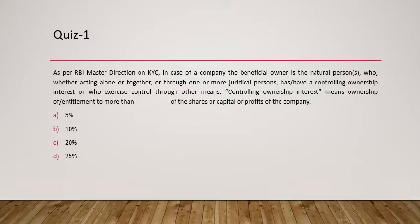Controlling ownership interest means ownership of or entitlement to a certain percentage of shares, capital, or profits of the company. Earlier the threshold was 25%, but with the changes introduced by RBI it is now 10%. So controlling ownership interest is now defined as 10% or more of shares, capital, or profits of the company.